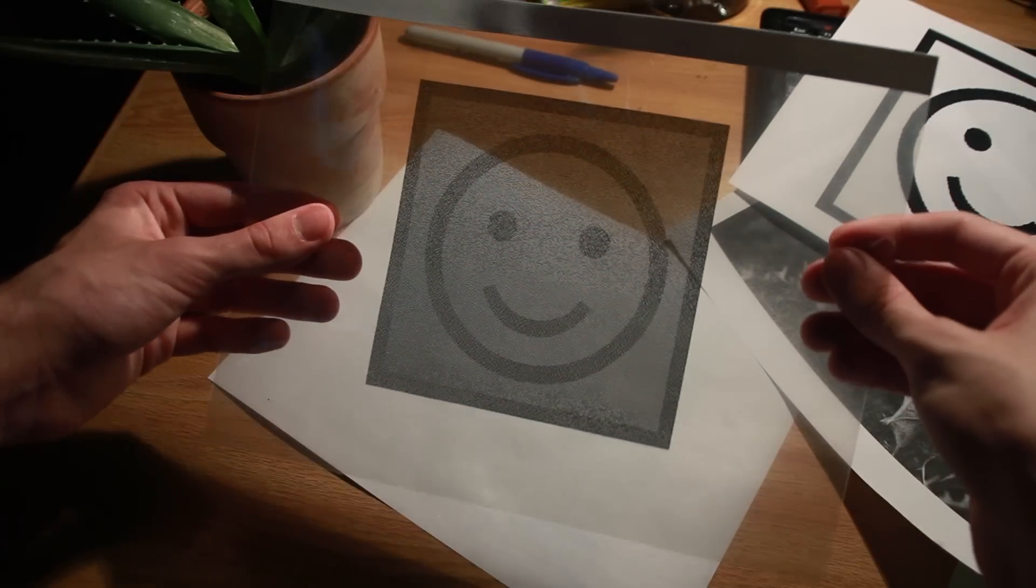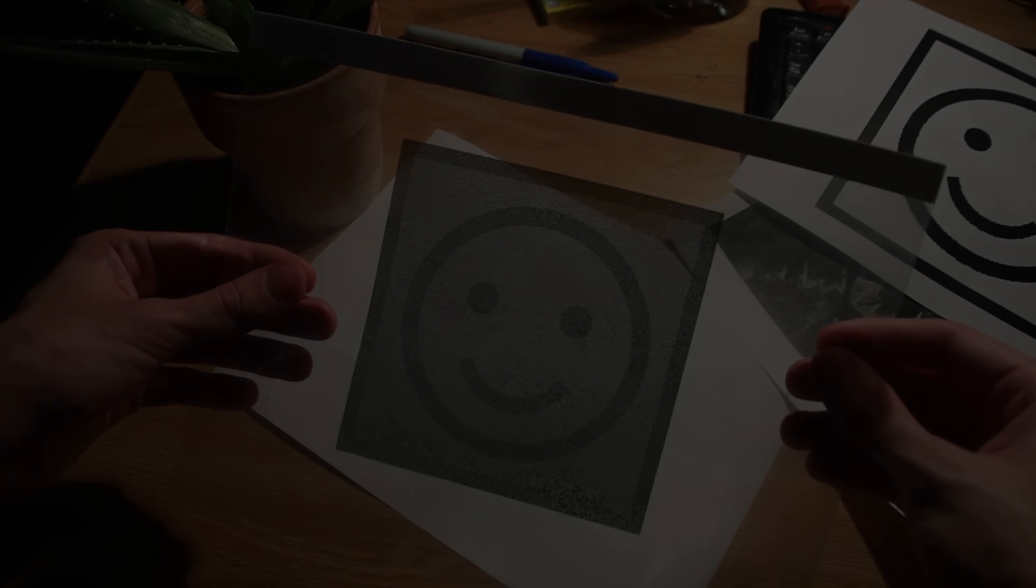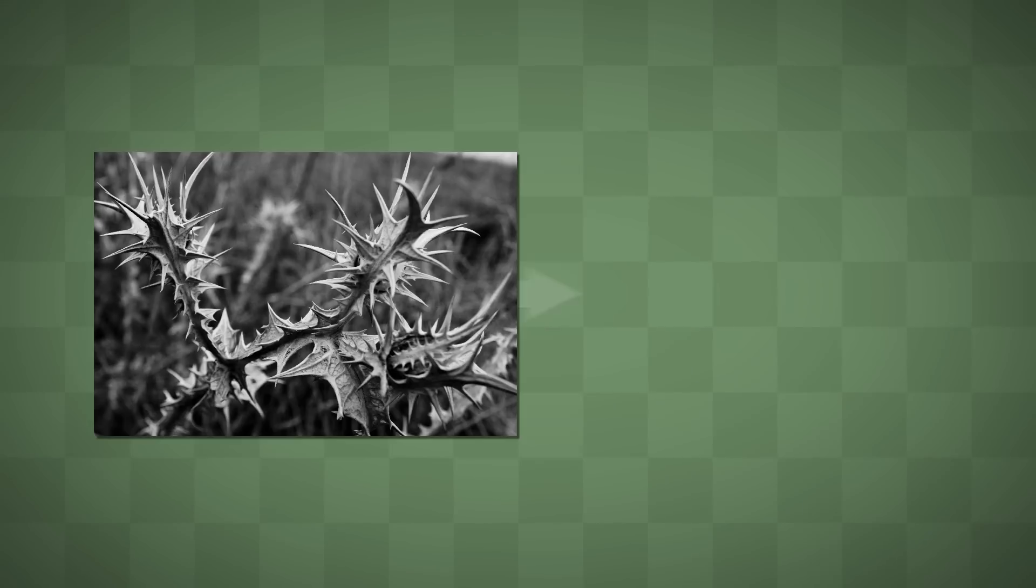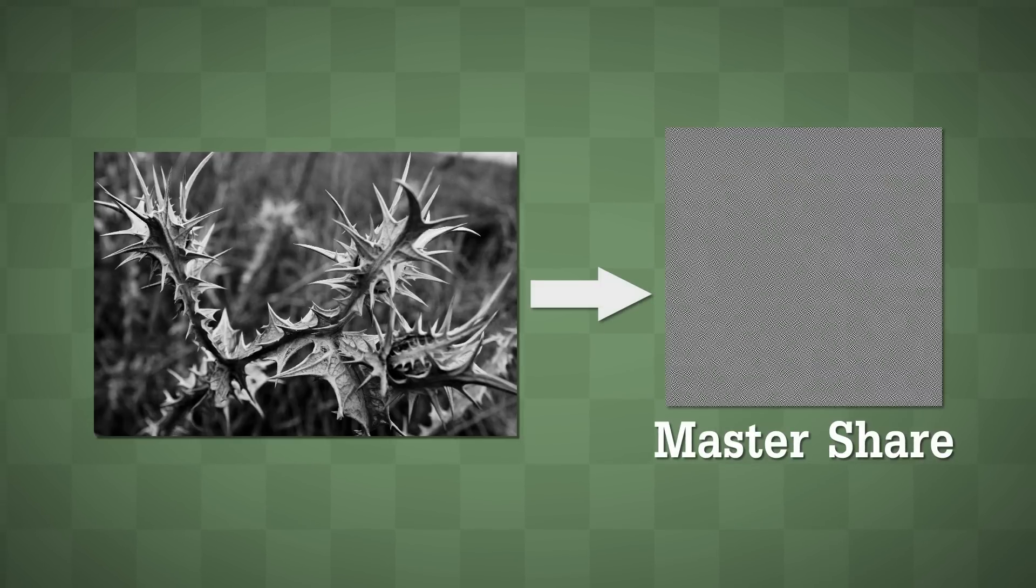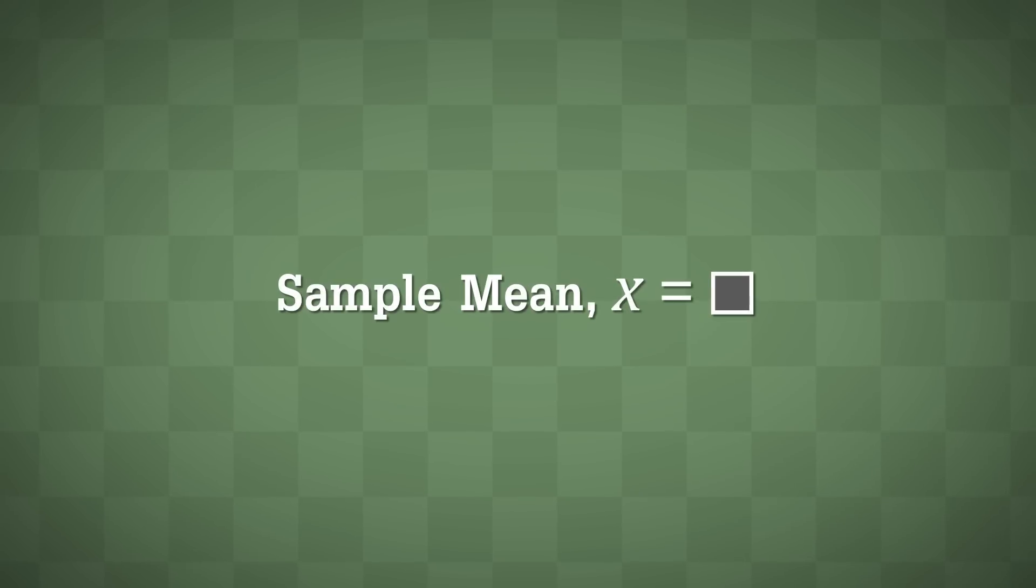So the trick to this algorithm is the method in which we come up with these shares. Because I want to protect my plant picture, I simply use data from my plant picture and the concept of sampling distribution of the means. To generate the first share, or master share, I begin by finding the mean or average value of my image. I then choose a pseudo-random sample from this image, which is say 50 random pixels, and then compute the mean of the sample.